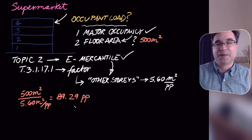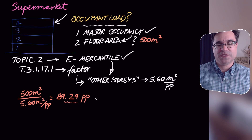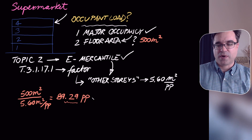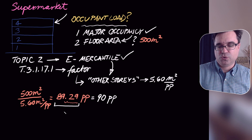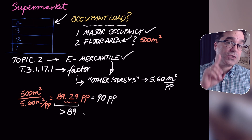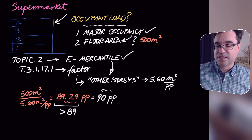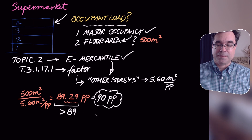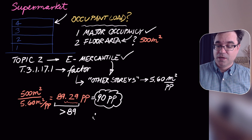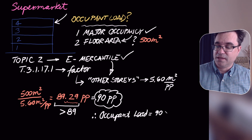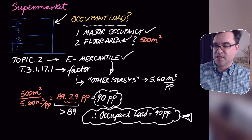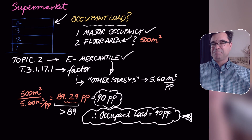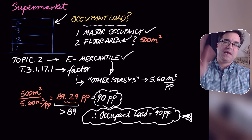We don't have fractions of humans, so we always round up. Since 89.29 is more than 89, the smallest whole number greater than 89.29 is 90. Therefore, the occupant load is 90 people. I make my final answer obvious and unmistakable. That's it — I hope that helps, take care and have a lovely day.